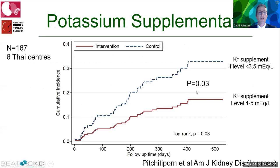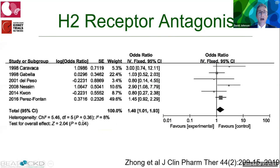Evidence for potassium supplementation comes from a six-center trial comparing proactive potassium supplementation (maintaining levels 4–5 mmol/L, shown in red) versus a reactive strategy (supplementation only if level fell below 3.5 mmol/L). Cumulative peritonitis incidence was significantly higher in the reactive group. For H2 receptor antagonists, a systematic review and meta-analysis of six RCTs showed a 40% increased risk of peritonitis, possibly related to altered intestinal permeability or gut microbiome changes.